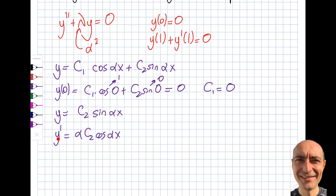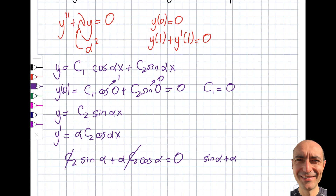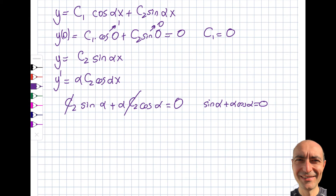Applying the second boundary condition y(1) + y'(1) = 0: C2 sin(α) + αC2 cos(α) = 0. Dividing through by C2 and then by cos(α) gives: tan(α) + α = 0, or equivalently tan(α) = −α. These are the eigenvalues — the values of α satisfying this transcendental equation.